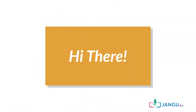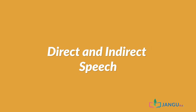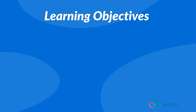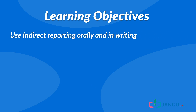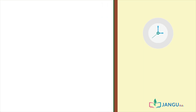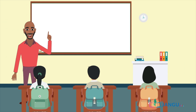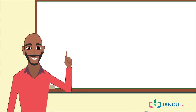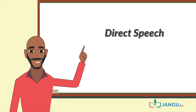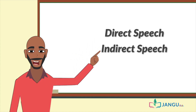Hi there! Today, we will learn about direct and indirect speech. At the end of the lesson, you should be able to use indirect reporting orally and in writing, and recognize the changes that take place in direct and indirect speech. When describing or reporting what someone said, we either repeat the person's exact words or we use our own words. These are known as direct and indirect speech.